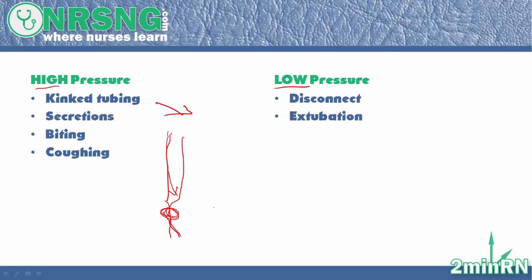Another cause is the patient having a lot of secretions. Once the tube becomes full with secretions from the patient's lungs or oral airway, or in the actual ET tube, it's not able to force that oxygen in there. Another cause would be the patient biting the tube. They may actually bite down on the tube so as it's trying to force oxygen in, it can't get it in there, causing that high pressure alarm.